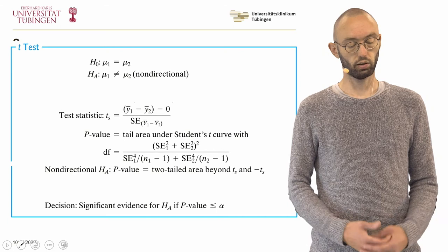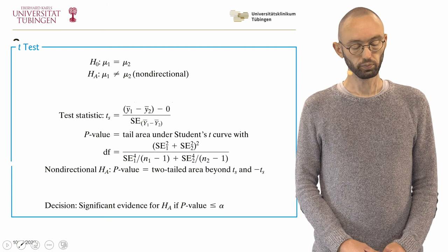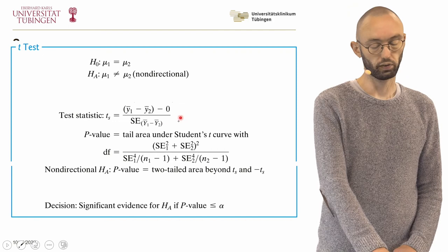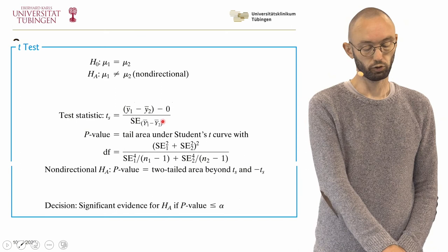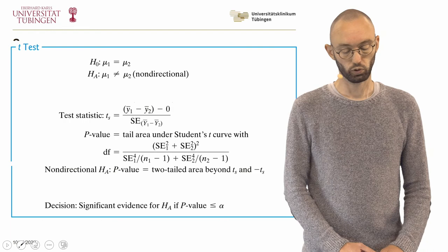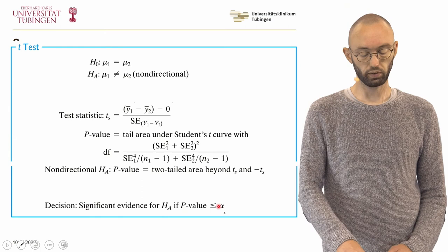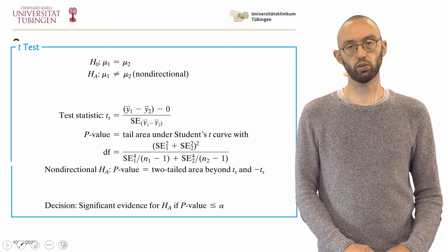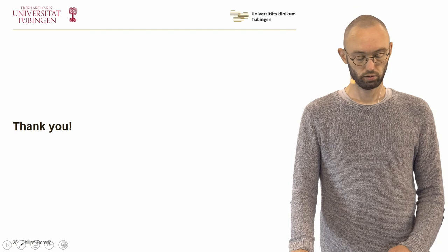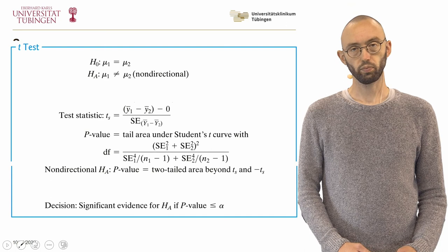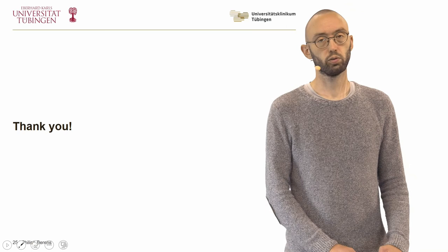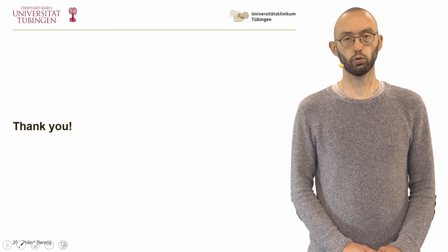To summarize the two-sample t-test: the null hypothesis is that the means are equal; the alternative is that they are not equal. The test statistic is the difference in sample means divided by the standard error of the difference. The p-value is the tail area under Student's t-curve, where the degrees of freedom are calculated by a specific formula. We conclude significant evidence for the alternative hypothesis if the p-value is smaller than alpha. This t-test assumes a Gaussian distribution but is fairly tolerant against deviations. We will discuss in the next video what to do if the Gaussian assumption is violated. Thanks a lot for your attention.